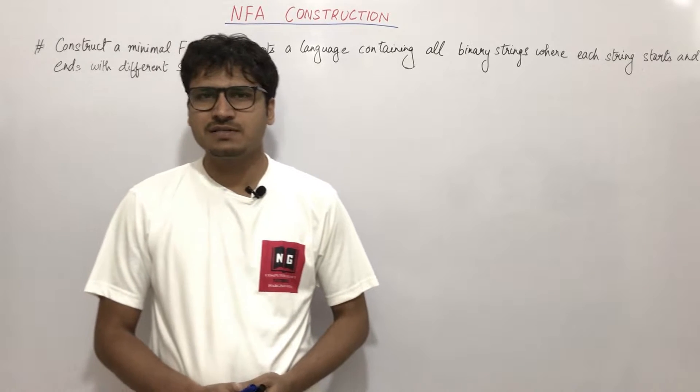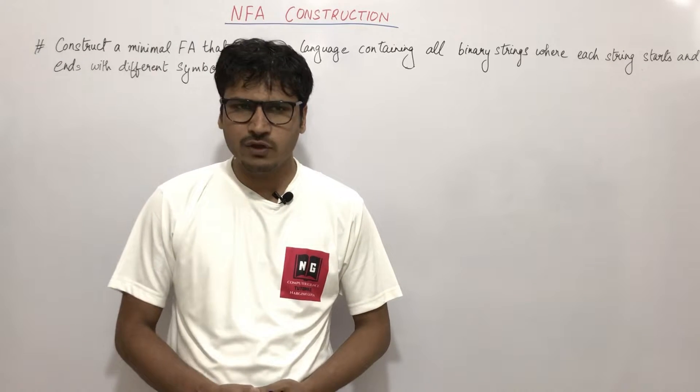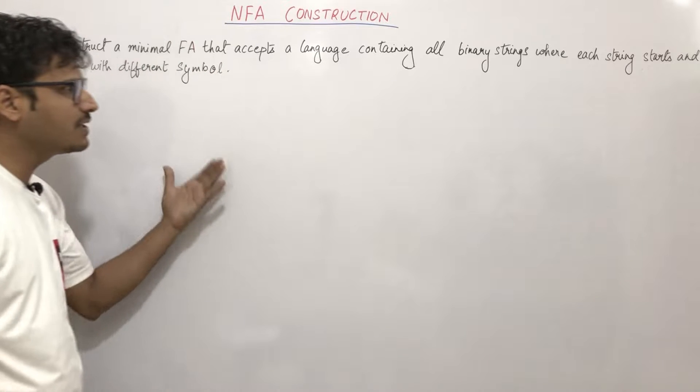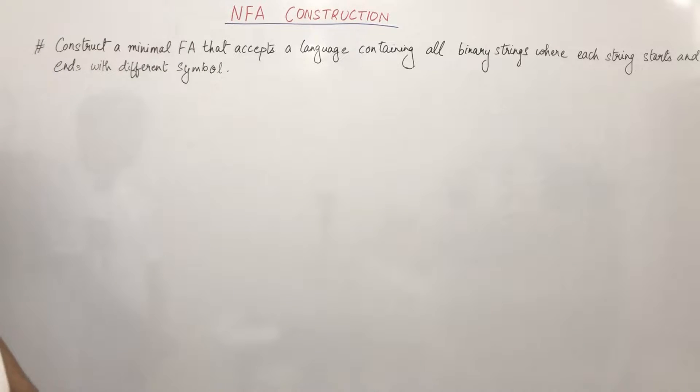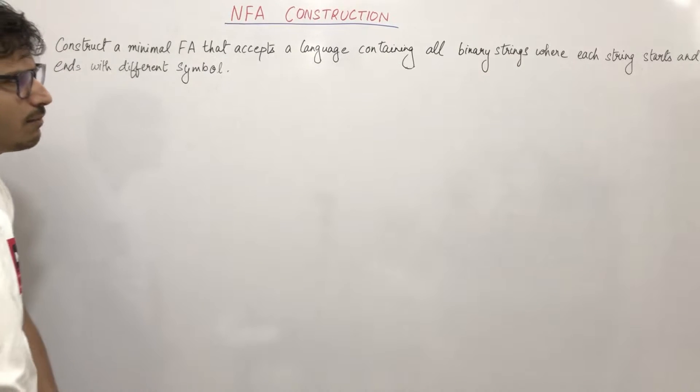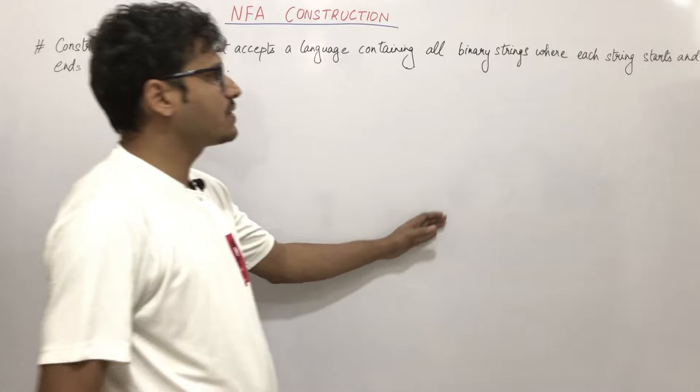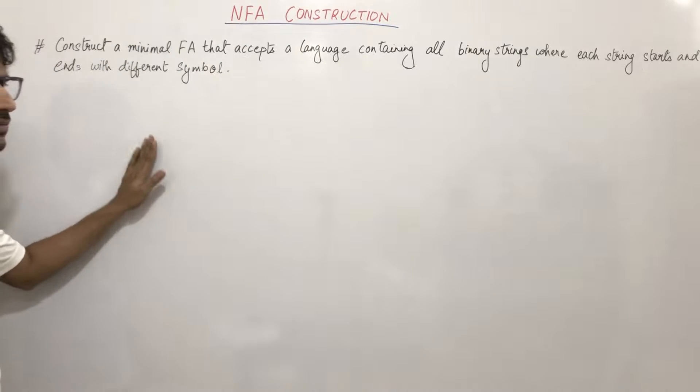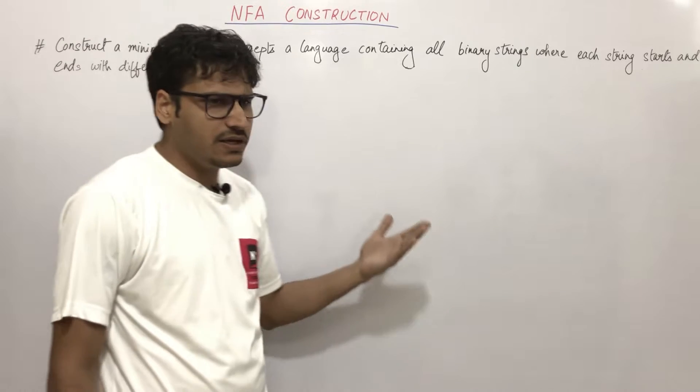In the last video we discussed the basics of NFA. Now in this video we have another question based on NFA construction. The question is: construct a minimal finite automata that accepts a language containing all binary strings where each string starts and ends with different symbols. We had this same question in the DFA case also.